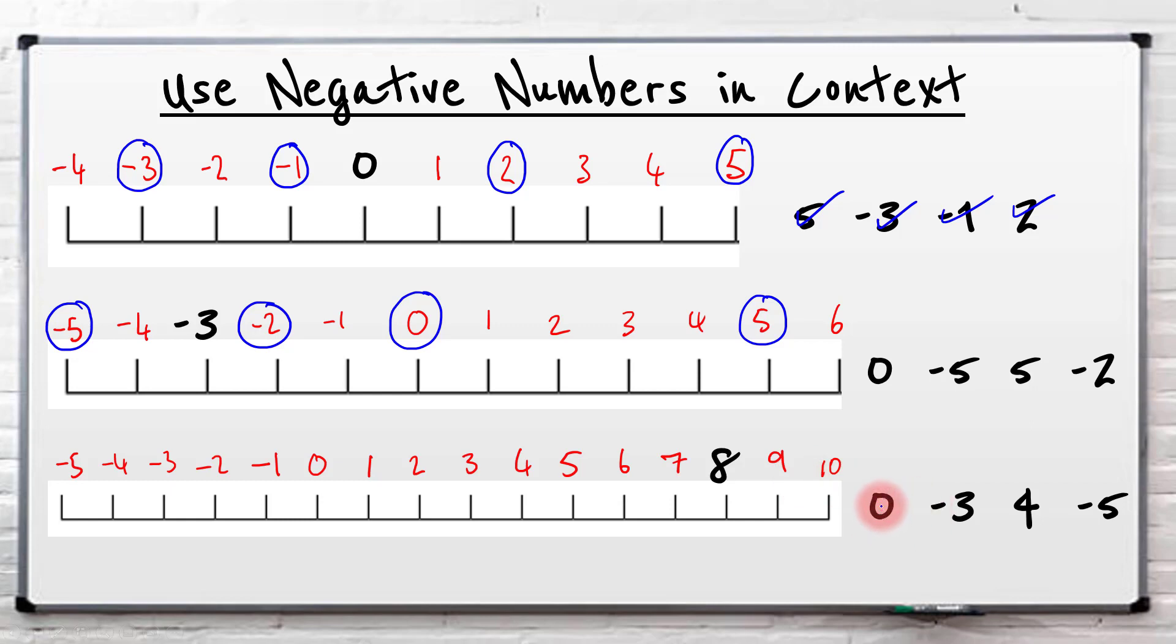Now, identify the ones where we've got our answers. So zero is there. Minus three, well, clearly it's there. Four is up here. And then finally minus five is the one at the bottom.